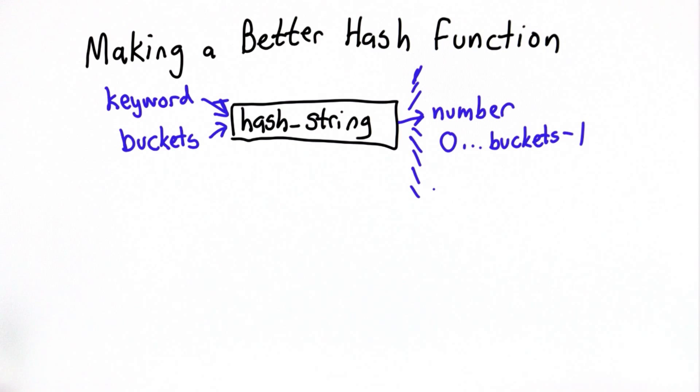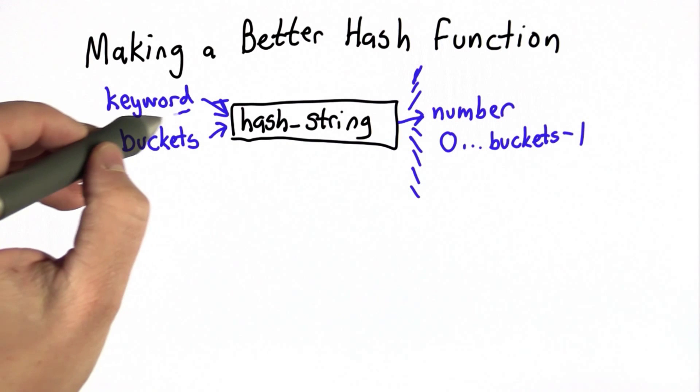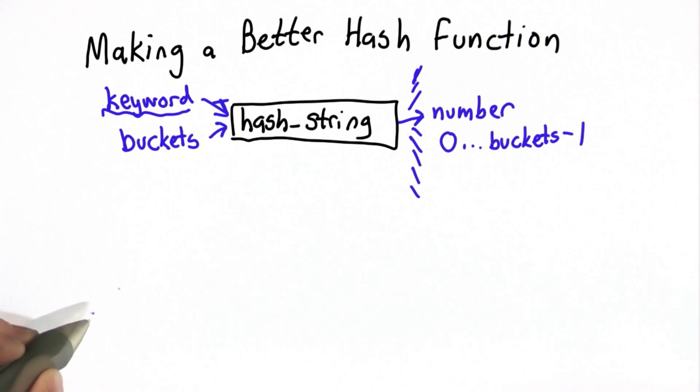In order to do better than we were doing before, we're going to need to look at more than just one letter of the keyword. If we look at just the first letter, we're not going to do better than having a limited number of buckets and a bad distribution. So what we want to do is look at all the letters of the keyword, not just the first letter, and based on all the letters, we'll decide the appropriate bucket.